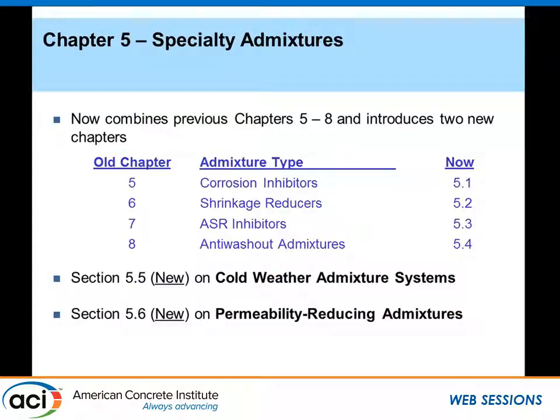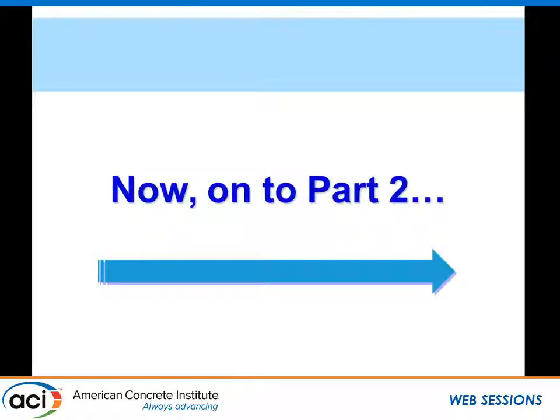That brings us to Chapter 5, which covers specialty admixtures. The previous Chapters 5 through 8 have now been combined into two new chapters. Section 5.5 is new, covering cold-weather admixture systems, and Section 5.6 covers permeability-reducing admixtures. At this point, the presentation is handed over to the next speaker to continue.